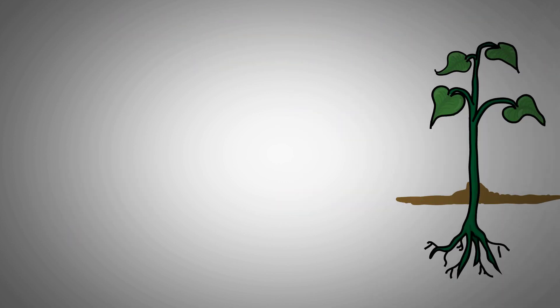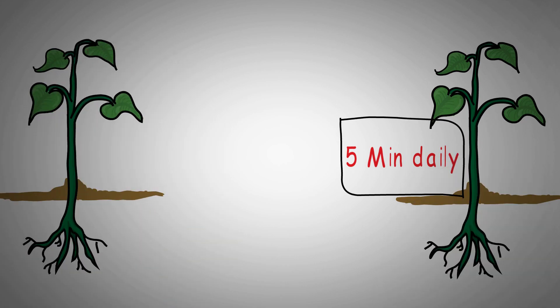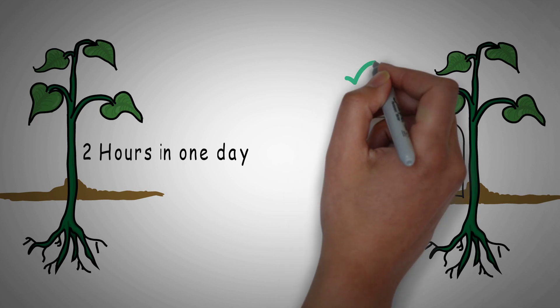For a plant to grow well, it's better to water the plants for about 5 minutes daily for 7 days rather than watering for 2 hours in a single day.